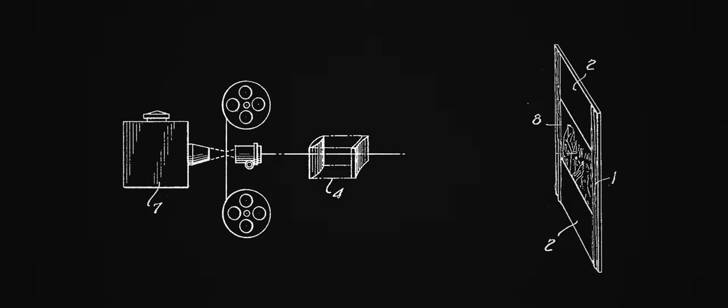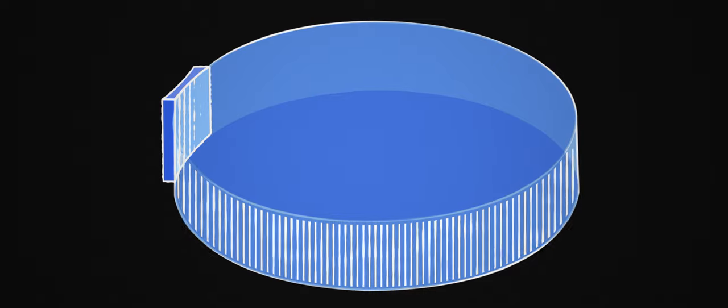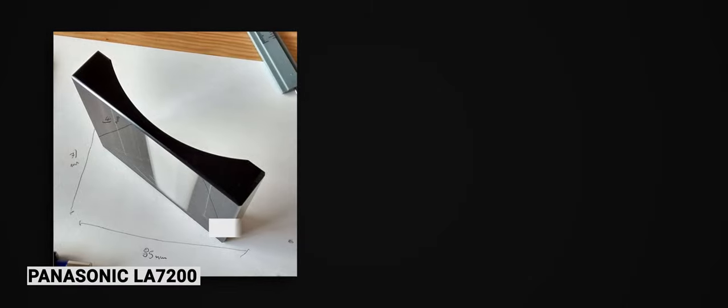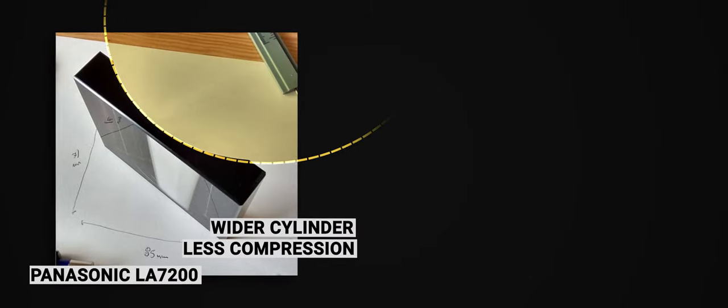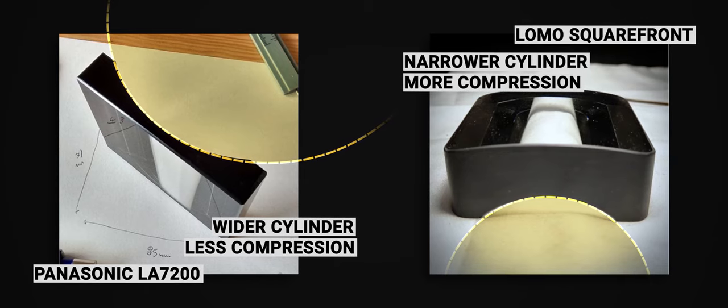The second method for anamorphosis is the one used in the Hypergonar, and the vast majority of other anamorphics to this day. The compression is created by cylindrical glass. If you look at the drawings on Chrétien's patent, you can see that if we expand this shape, it doesn't turn into a sphere but a tube — a cylinder — hence the name cylindrical glass. Curvature exists only in one axis, creating the squeeze. The wider the cylinder, the lesser the squeeze, so a lens with a wider cylinder diameter has a more subtle compression than one with a narrower cylinder diameter.